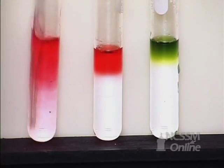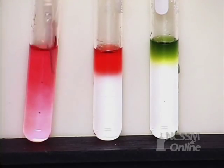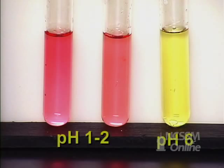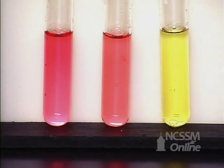So you see that the first two are red, indicating that they're acidic. These two are in the pH range of 1 to 2. This is in the pH range of about 6.